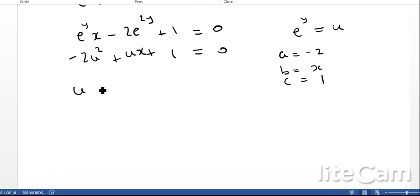And therefore we're going to get u equals, and then I'll times everything by negative 1 just to make the calculation slightly simpler. So I'm going to end up with x plus or minus x squared plus 8 all over 4.